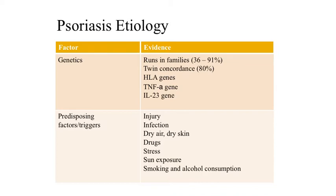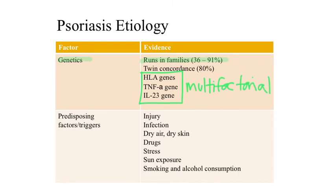There are both genetic and environmental factors that play a role in the development of psoriasis. Like other autoimmune conditions, psoriasis runs in families. There is estimated to be between 36% and 91% heritability of psoriasis, and multiple gene loci are involved, making it a multifactorial genetic disorder. Some of those genetic loci include the HLA genes, the TNF-alpha gene, and the gene that encodes interleukin-23, or IL-23.